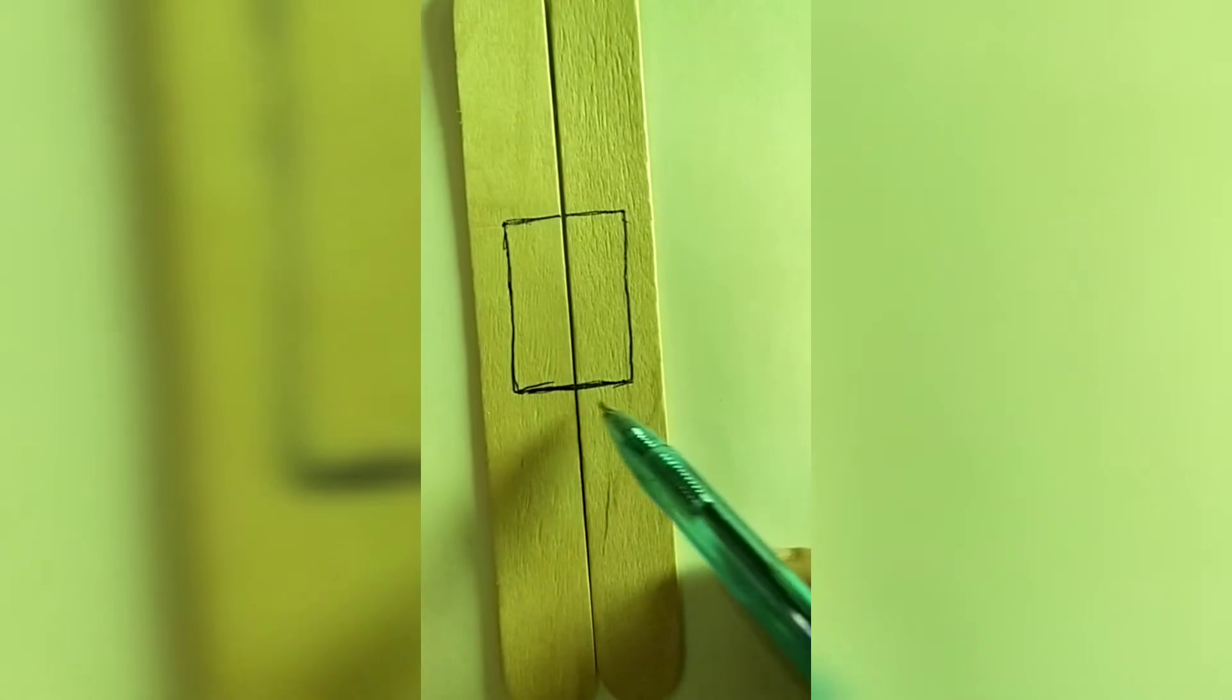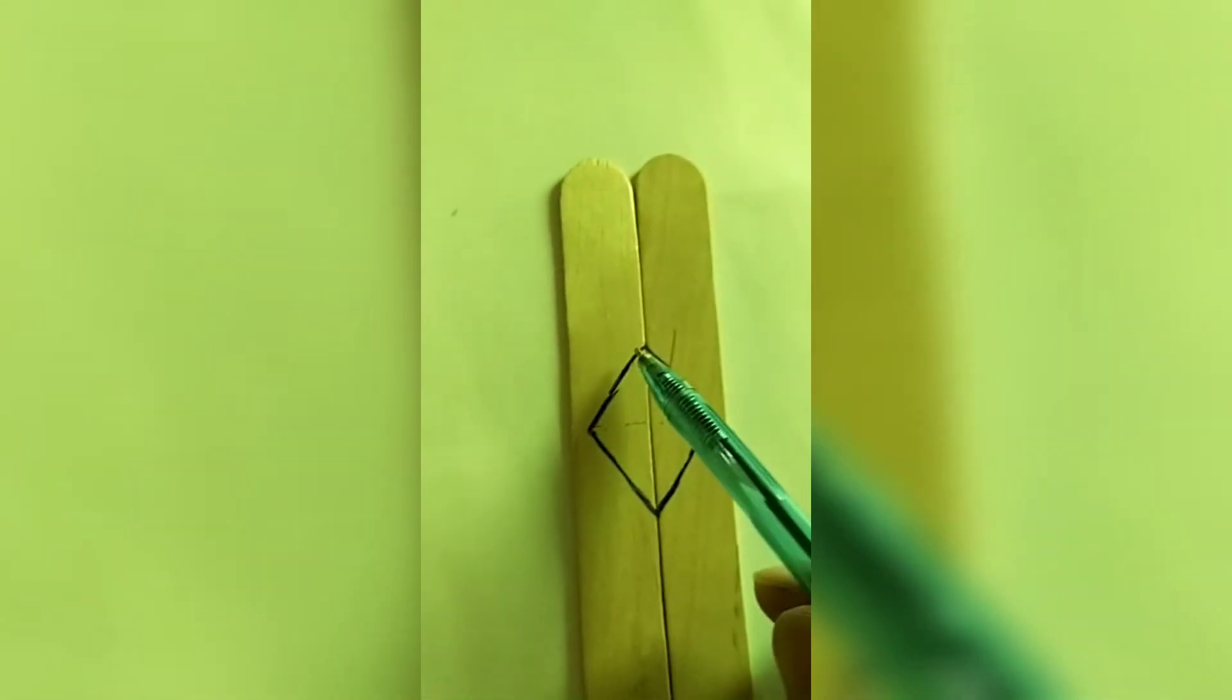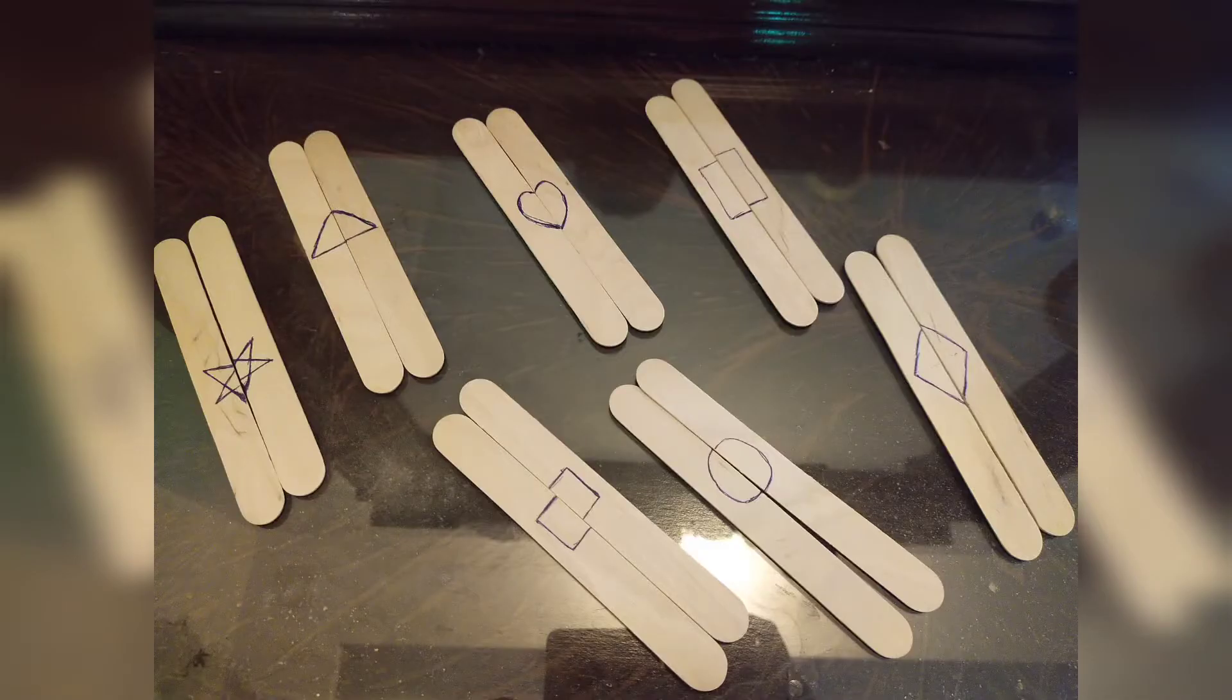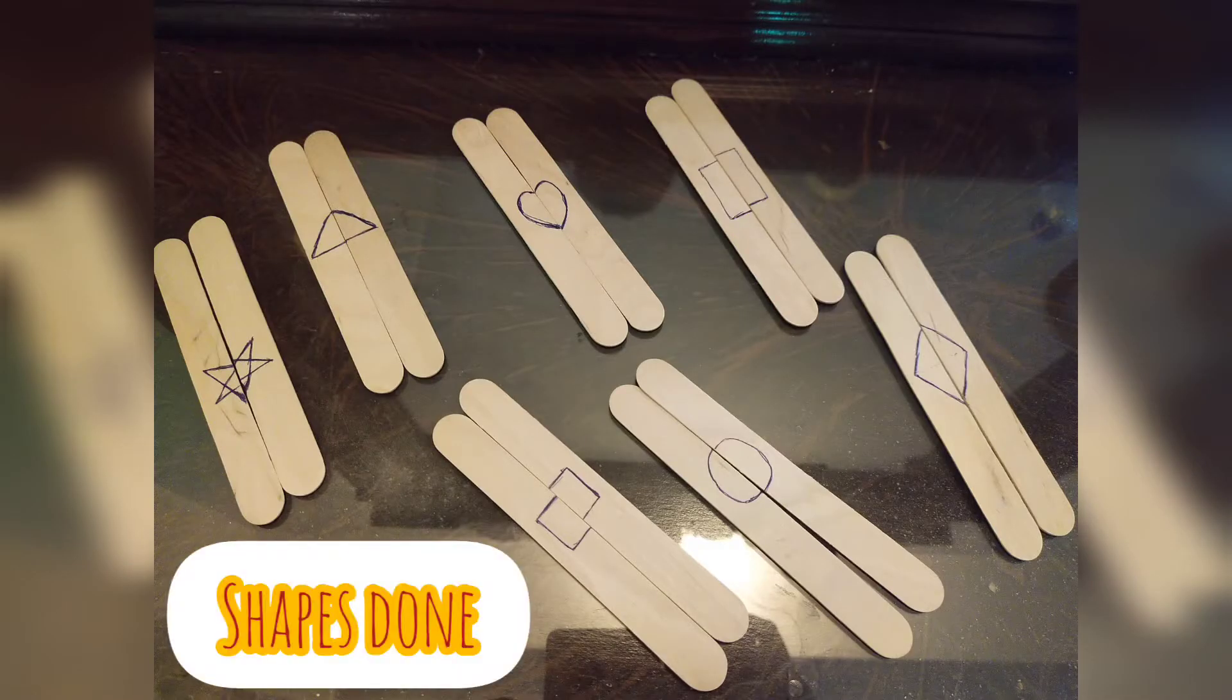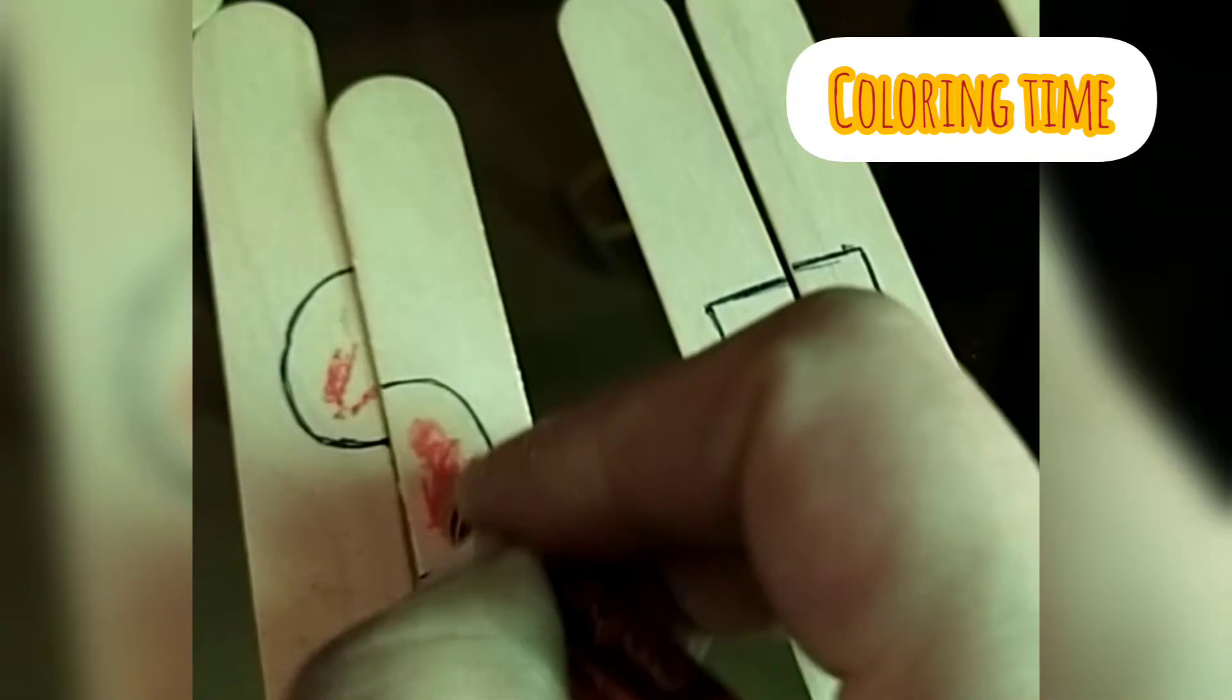First you have to draw some shapes. If you have a printer you can also paste the shapes. Here are many different shapes. You can see shapes are done - some stars, triangles. Now time to color them and now I will color them as you can see.